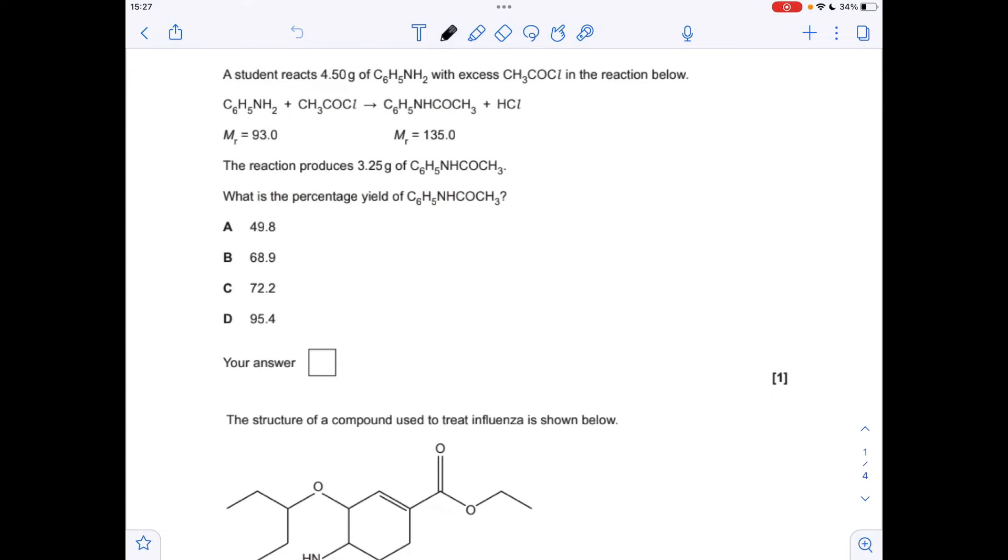Okay, so the first question is a straightforward percentage yield calculation. We've got the mass of the amine that we start with. We also know the MR so we don't have to mess around calculating those. The first thing we need to do is work out how many moles of amine we've got. So mass over MR gives 0.0484 moles of amine.